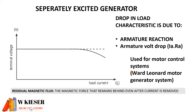In terms of the load characteristic curve for a separately excited generator, it's pretty much the same as the shunt generator. It has a relatively constant characteristic; however, it does tend to drop off towards the end, and the reason for this drop off is due to armature reaction and the armature volt drop.